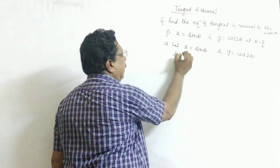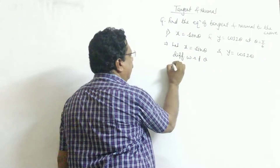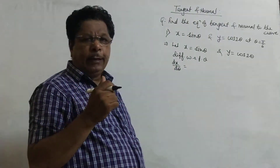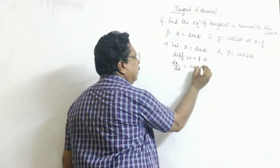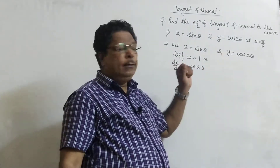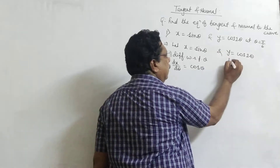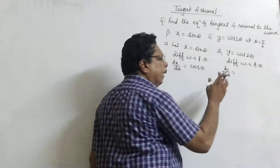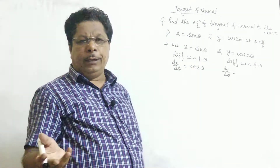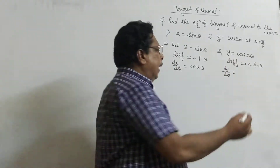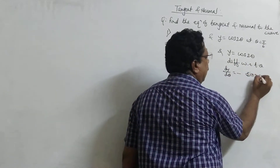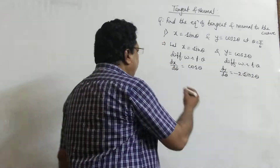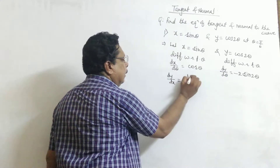So differentiate both functions with respect to theta. The derivative of x with respect to theta is dx/dθ. The derivative of sin θ is cos θ. Similarly, find dy/dθ — differentiate y with respect to theta. The derivative of cos f(x) is −sin f(x) · f'(x), so the derivative of cos 2θ is −sin 2θ · 2, which gives dy/dθ = −2 sin 2θ.